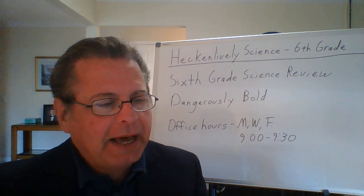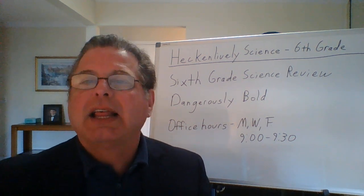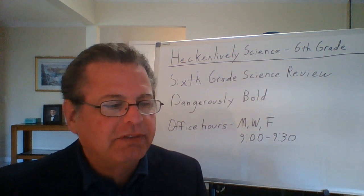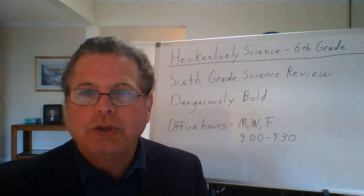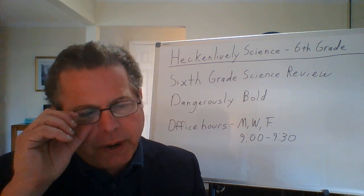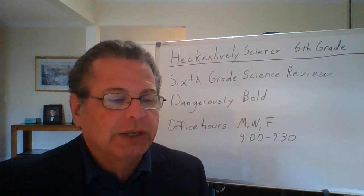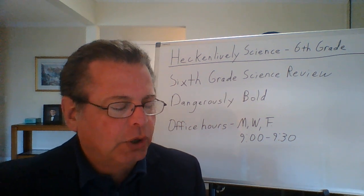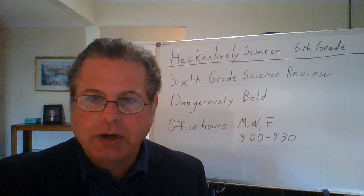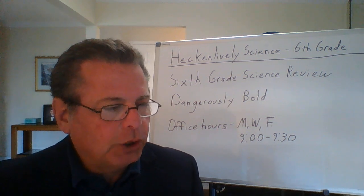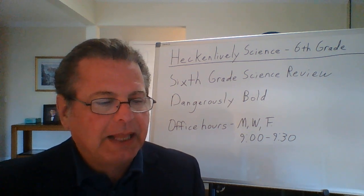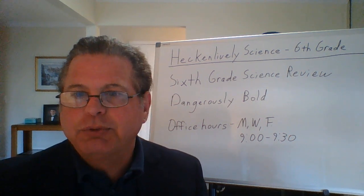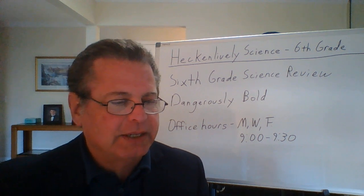Question one: how does altitude affect climate? The higher the altitude, the colder the climate. Number two: how does latitude affect climate? The farther the latitude is away from the equator, the sun's rays do not strike the earth as directly, providing less heat and creating a colder climate. Three: how do large bodies of water affect climate? Large bodies of water will tend to moderate the climate of a region, meaning it will be less cold but also less hot, and the temperature variations will not be as extreme.